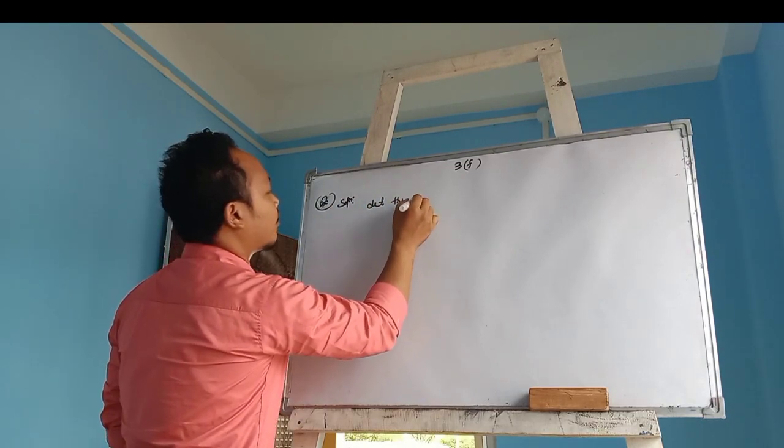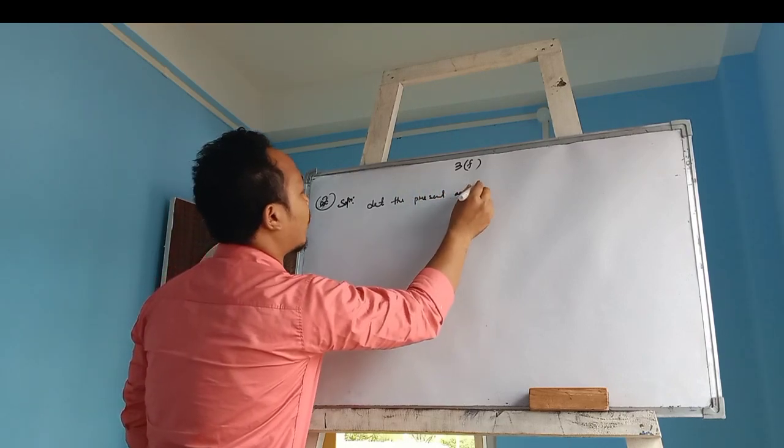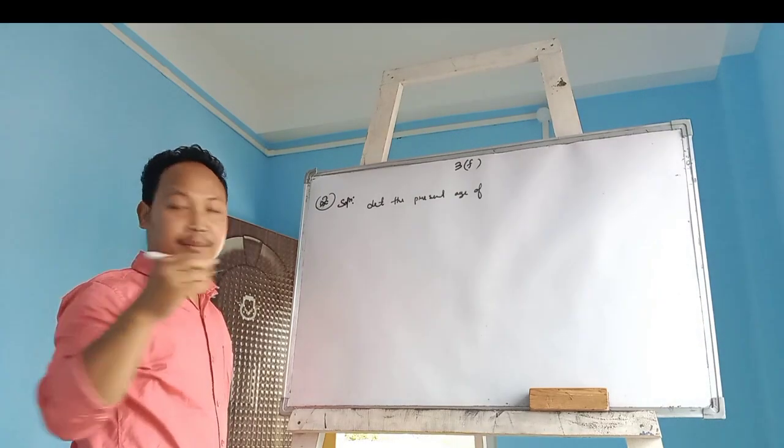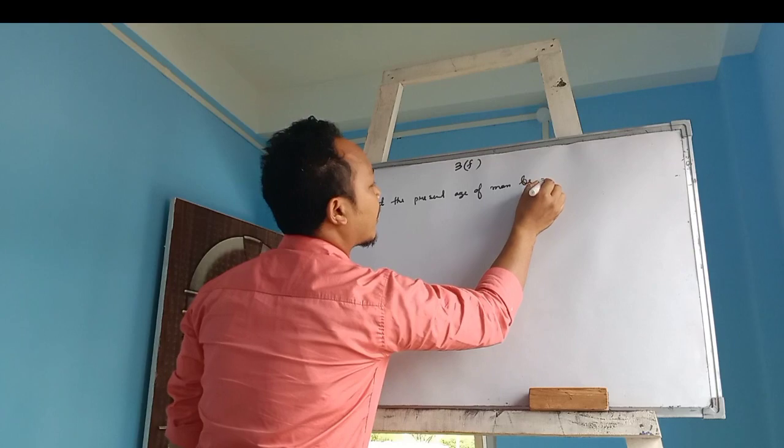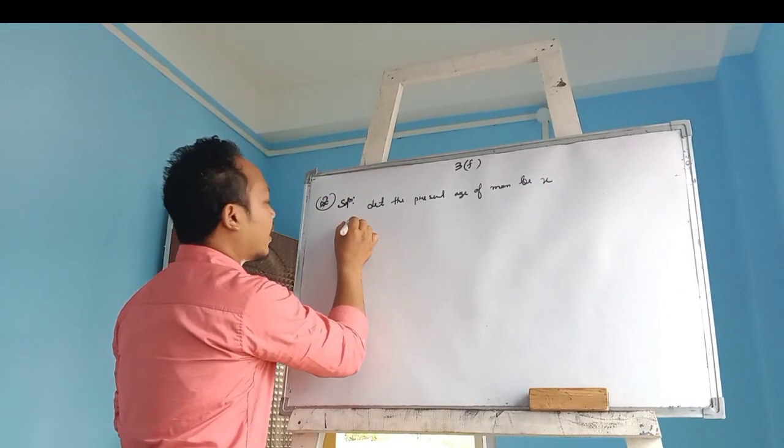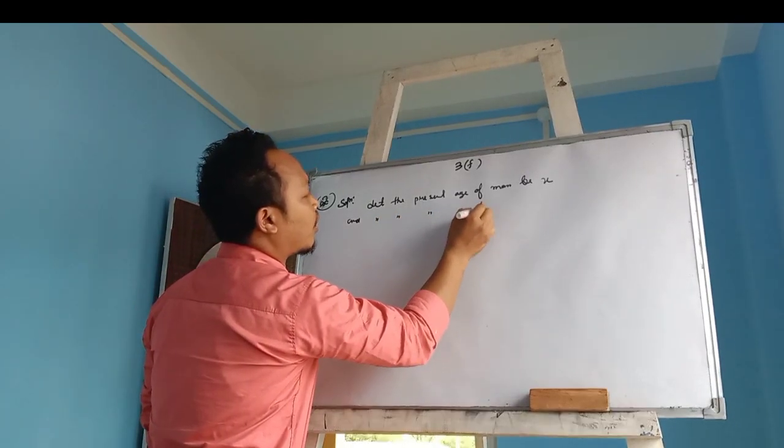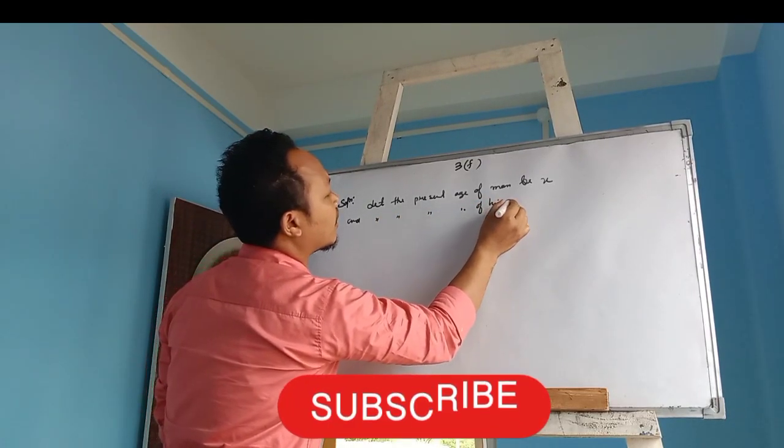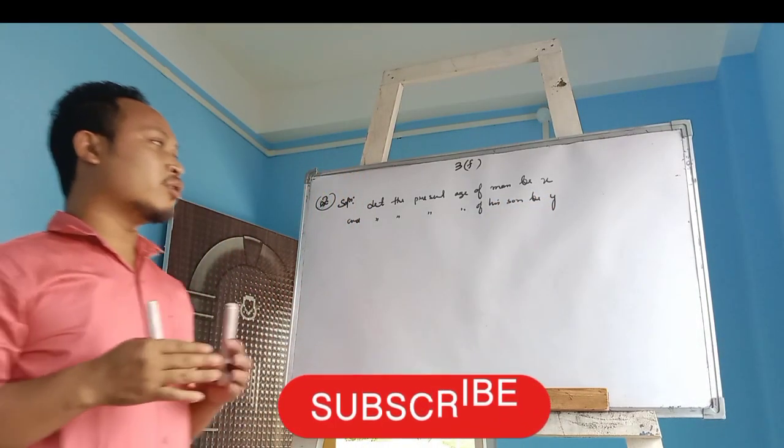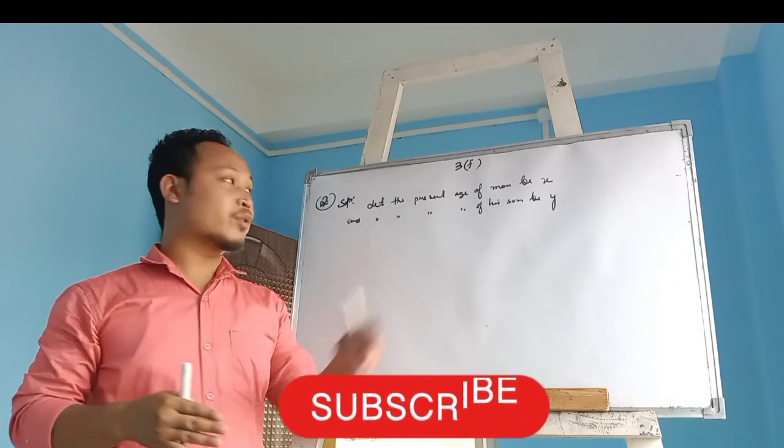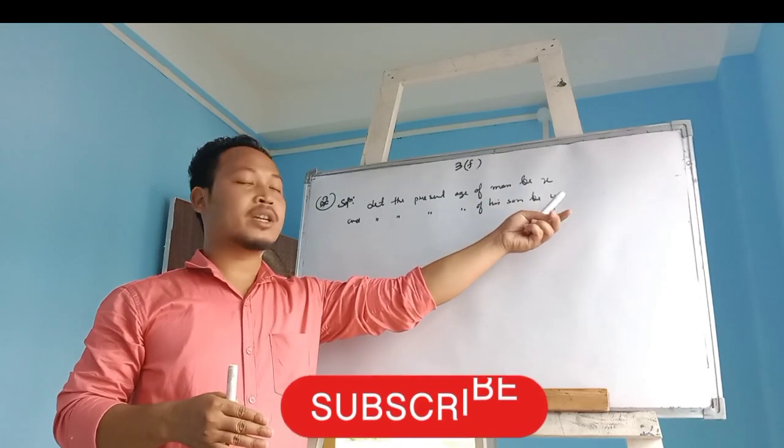Similarly, let the original age of his son be y. Okay, because we don't know the exact original age, that's why we are thinking the original age is x and the original age of son is y.